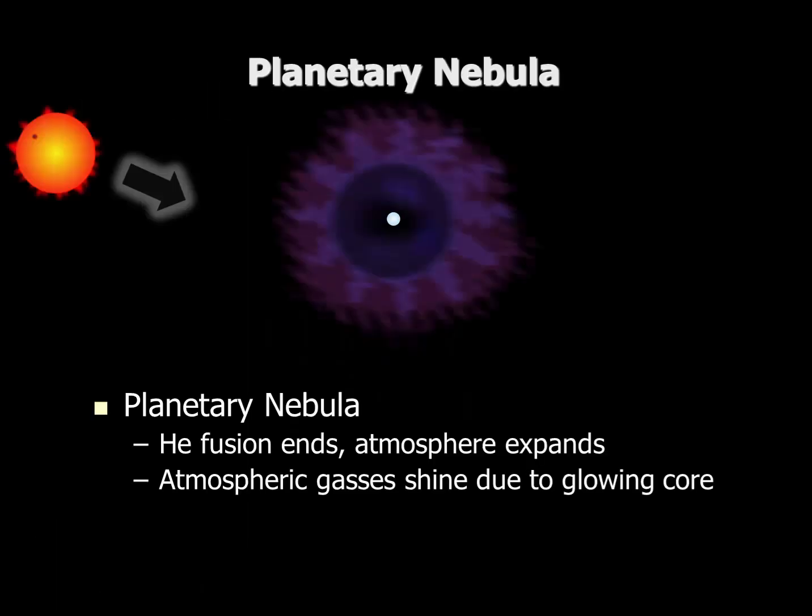On to a planetary nebula. At first the star is doing hydrogen fusion, then helium to carbon fusion. When the helium fusion ends, the atmosphere will expand out towards space. Due to the glowing hot core, the atmospheric gases may shine and fluoresce due to the high energy radiation coming from the core. This is the planetary nebula.